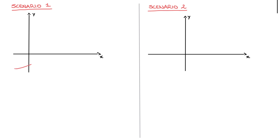Let's say we're given some curve looking something like this, and I'll call that y equals to f of x. We need to find the area enclosed by this curve and the y-axis between y equals to c and y equals to d. That would correspond to the area I'm enclosing right now, which I'll shade in green.